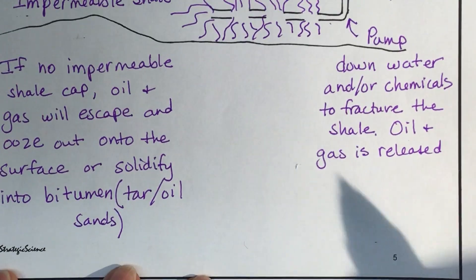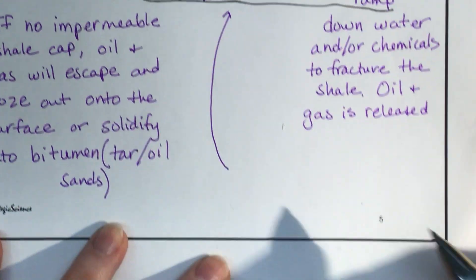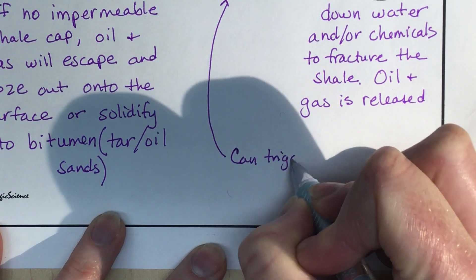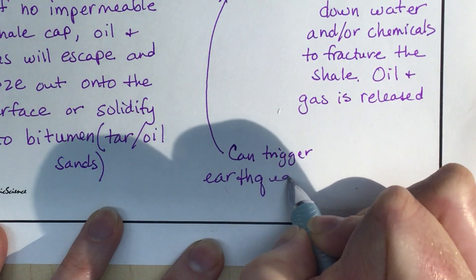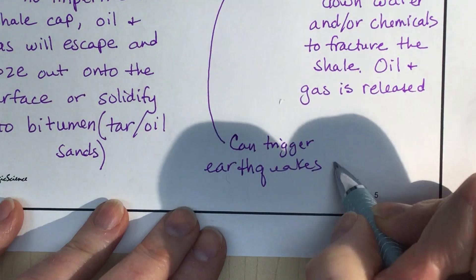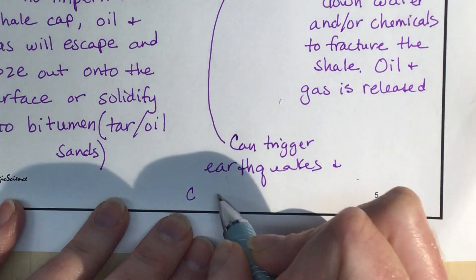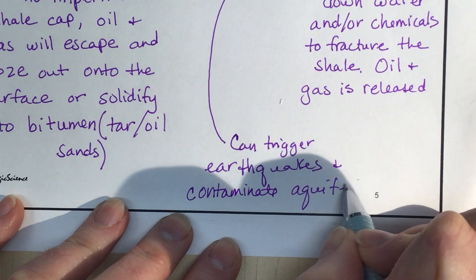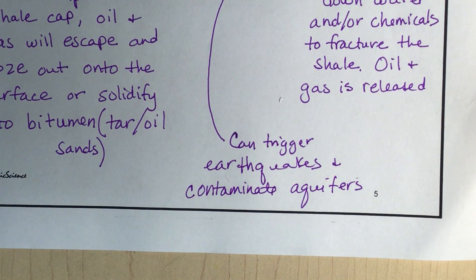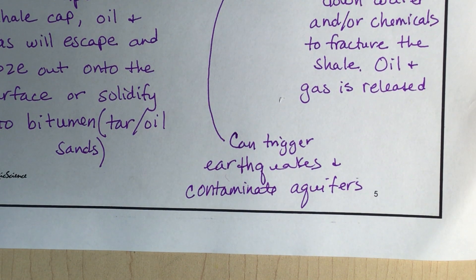One of the problems with fracking is that it can cause earthquakes. Oklahoma, where there is a huge amount of fracking, now experiences earthquakes where there were very few before. On the other hand, the benefits of fracking are that it has allowed us to switch from coal to natural gas, which is the cleanest of the fossil fuels. It has also brought the price of energy down and provided jobs.